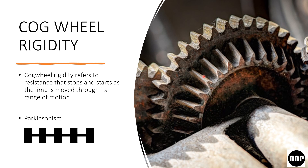When I examined a patient with cogwheel rigidity, trying to move his limb produced increased resistance, followed by a free movement, then resistance again, then free movement again. This type of rigidity is seen in parkinsonism.